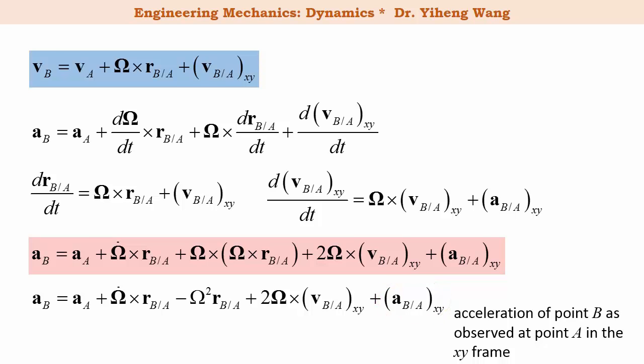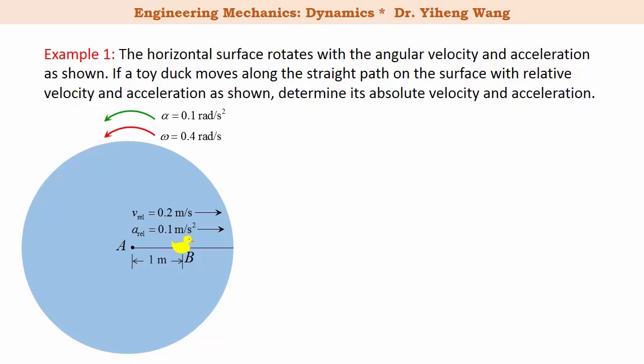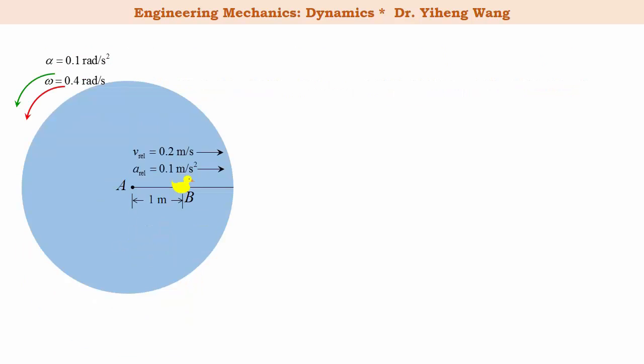Now let's look at examples. There is a horizontal surface rotating about point A with a given angular velocity and angular acceleration. There is also a toy duck moving along a straight line on this surface, and its relative linear velocity and linear acceleration on this line are also given. We need to determine the duck's absolute velocity and acceleration at this instant. First, we set up our coordinate systems: a fixed reference frame represented by capital X and Y, and a rotating frame represented by lowercase x and y, which is currently superimposed with the fixed frame. The rotating frame is fixed to the rotating surface, so it has the same angular velocity and acceleration as the surface.